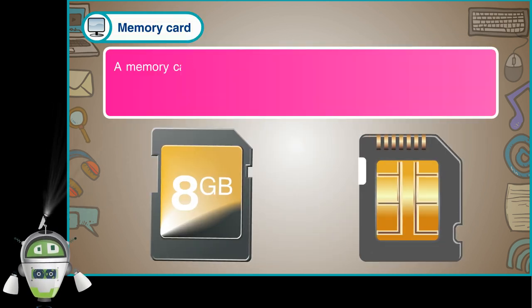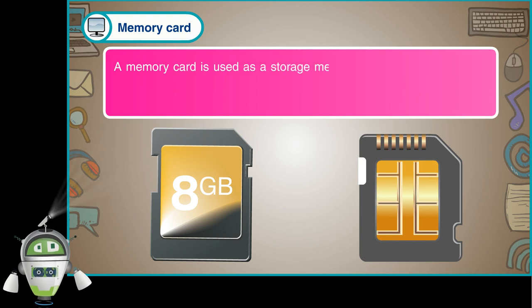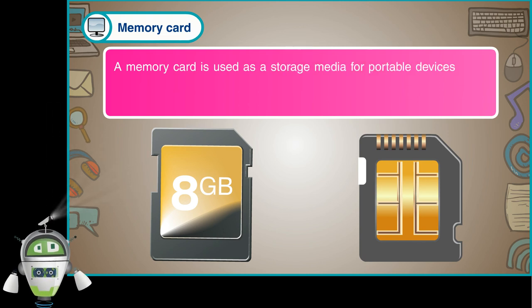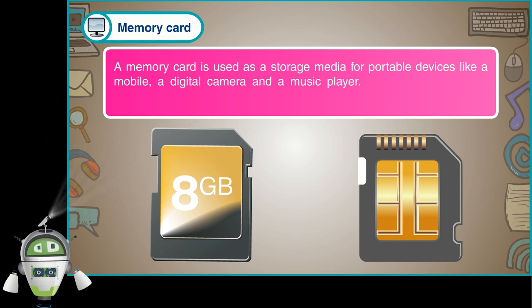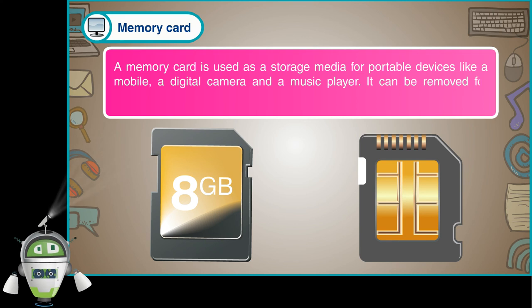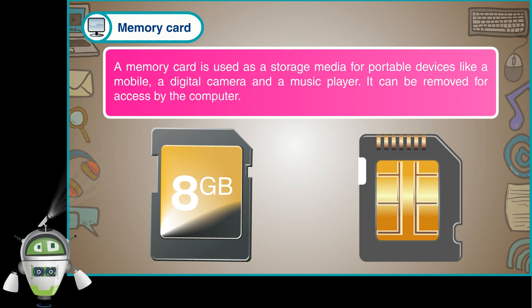A memory card is used as a storage media for portable devices like a mobile phone, a digital camera, and a music player. It can be removed for access by the computer.